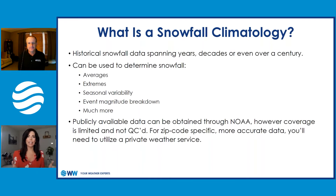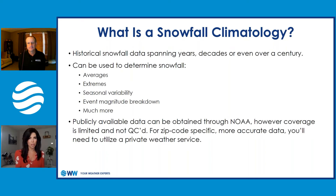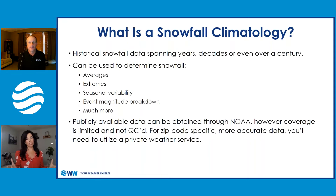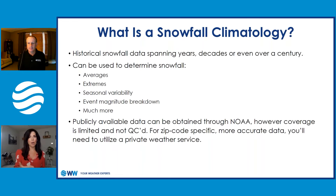Our plan is to help you create a bigger business portfolio. It's all about really knowing the location where you're working, whether you're a property manager or a contractor. This is going to help you build your relationship — if you're a contractor, a better working relationship when you really know the climatology of the area. Snowfall climatology is historical snowfall data spanning years, decades, and even sometimes a century. It can be used to determine averages, extremes, seasonal variability, event magnitude, and more. There's a significant number of contractors and property managers that are really starting to dig into climatology to help with their bidding process.